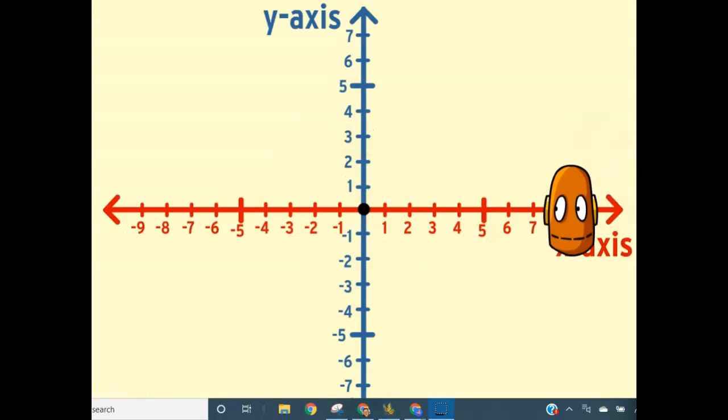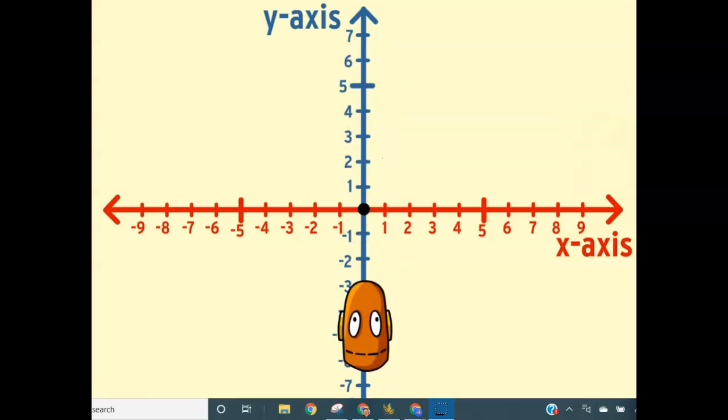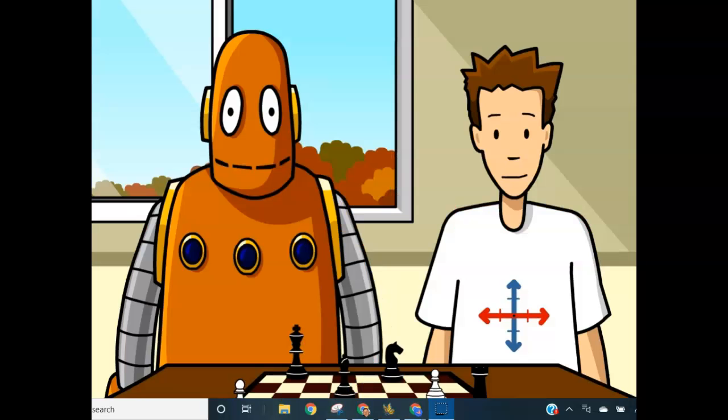One line represents the horizontal distance from the origin, we call that the x-axis. The other line represents vertical distance from the origin, that's called the y-axis. These lines help us find our way around the plane.